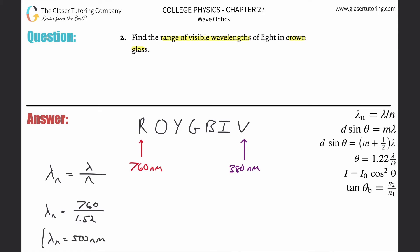You would do the same thing for the violet. So it would be λn = 380 nanometers divided by 1.52, which is the index of refraction for crown glass.